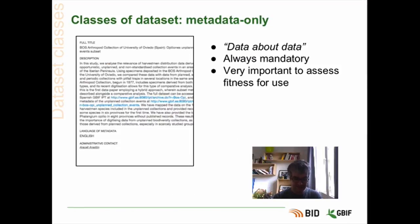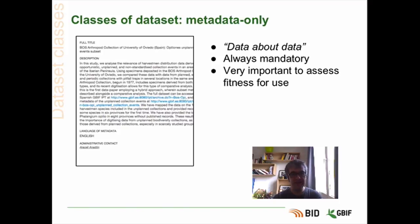When publishing a dataset, it's crucial to provide some information about the dataset itself. This information is called metadata. At GBIF, a typical metadata record will, for example, contain a paragraph with an abstract describing the dataset, some contact information, and maybe also data about the taxonomic and geographic coverage of the dataset. This metadata is very important from the user point of view. If a person wants to use your data, he or she will need to assess the fitness for use, and to do so, he or she will need to have access to the metadata.